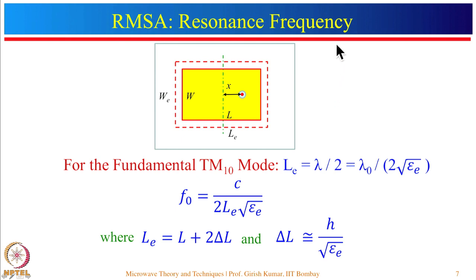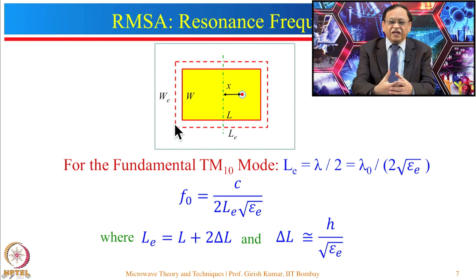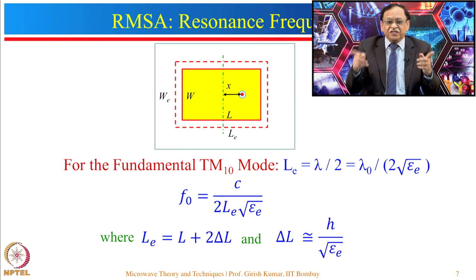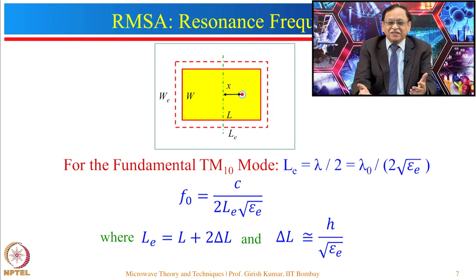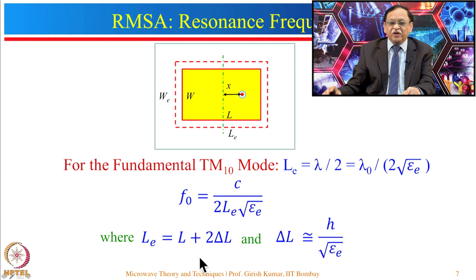Let us find the resonance frequency of a rectangular microstrip antenna. The rectangular patch has length L and width W. There are also effective length Le and effective width We, shown as dotted lines. The effective length arises due to fringing fields from the edges, which account for additional capacitance. This additional capacitance is compensated by extending the length outward, so Le equals L plus 2 times delta L, where delta L is the extension in each direction.